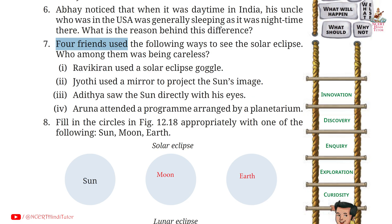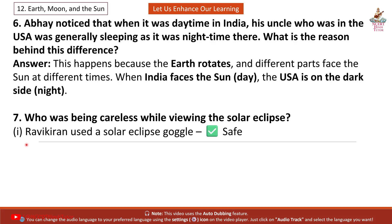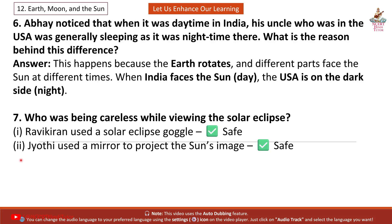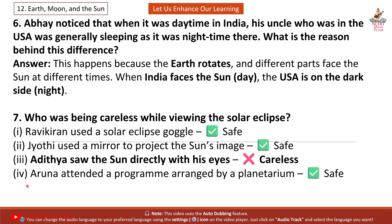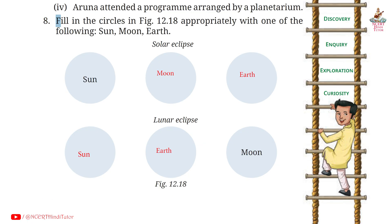Question 7. Four friends used the following ways to see the solar eclipse. Who among them was being careless? First, Ravi Kiran used a solar eclipse goggle — safe. Second, Jyoti used a mirror to project the Sun's image — safe. Third, Aditya saw the Sun directly with his eyes — careless. Fourth, Aruna attended a program arranged by a planetarium — safe. So the answer is Aditya was being careless.